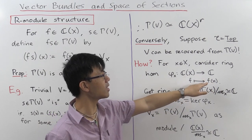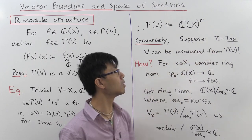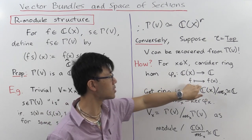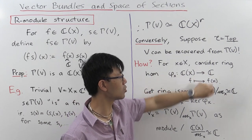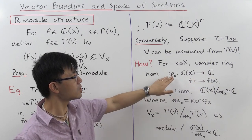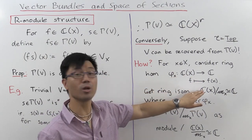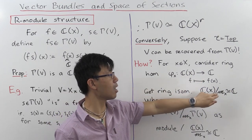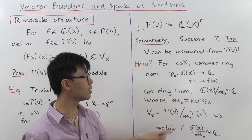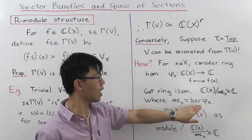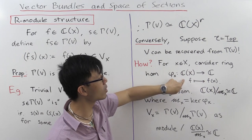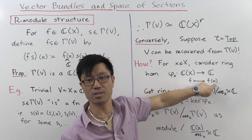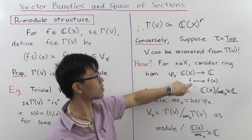Also, you can see that it's surjective because we're looking in the category of topological spaces — it's easy to generate a function which maps onto any constant. So since you have this ring homomorphism, you can apply the first isomorphism theorem to tell you that the image, which is C, is isomorphic to the ring C(X) modulo some ideal — the kernel of this homomorphism. So m_x is the kernel of phi_x. This kernel has a very natural interpretation: it's all the functions here which take on the value zero at x — all the functions which are zero at x.